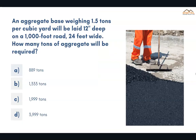An aggregate base weighing 1.5 tons per cubic yard will be laid 12 inches deep on a 1,000 foot road, 24 feet wide. How many tons of aggregate will be required? The correct answer is B, 1,333 tons.